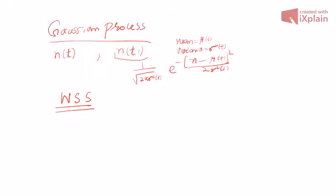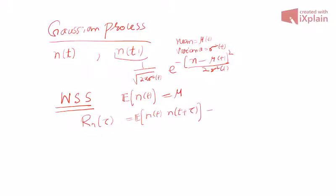Now we will be interested in a Gaussian process which is wide sense stationary. Stationary means that the mean is constant first of all — so the expected value of n(t) is simply μ. The other condition is that its autocorrelation function R_n(τ), defined as the expected value of n(t)·n(t+τ), will be only a function of τ. This is a general wide sense stationary Gaussian process.